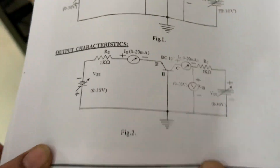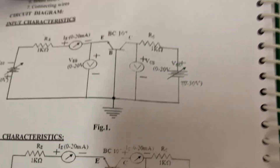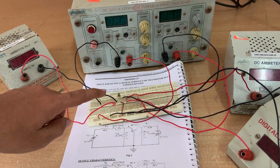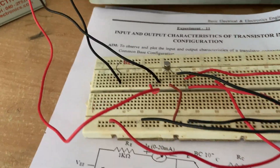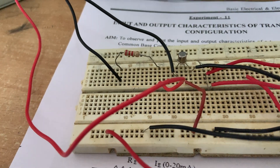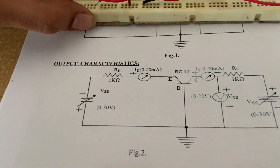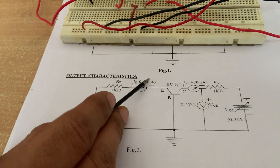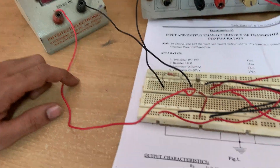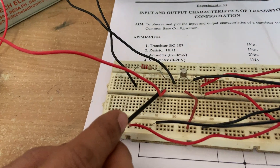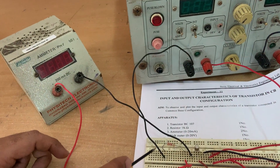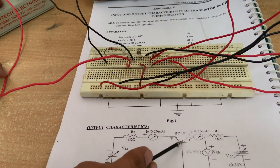Now I am going to explain the CB output configuration. This circuit shows the CB output connection diagram. In this case also, the base is connected to ground. The emitter is connected to the ammeter negative, and the ammeter positive is connected to the resistance. The resistance second end is connected to the RPS negative, completing the input side.